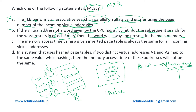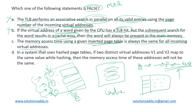So we will not consider that option either. The third option says that the memory access time using a given inverted page table is always the same for all incoming virtual addresses. An inverted page table is just like a hash map — we have entries as keys and their corresponding values, storing page numbers and their corresponding frame numbers. So it is essentially a hash map data structure.